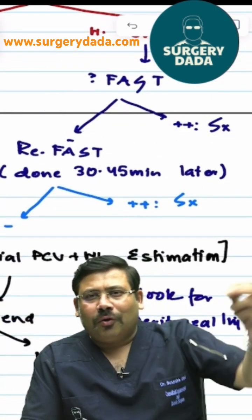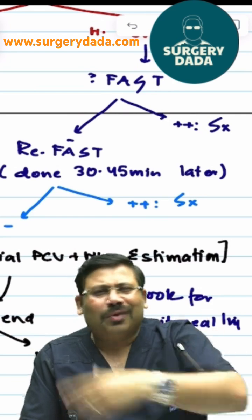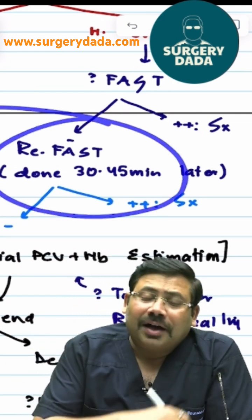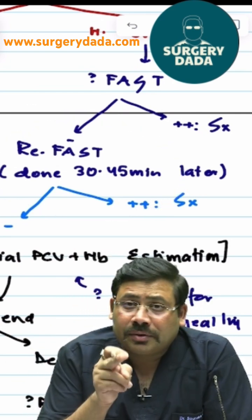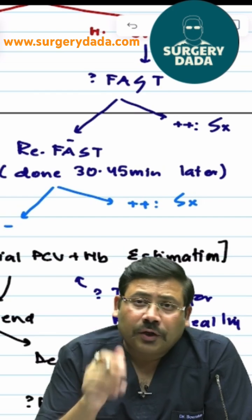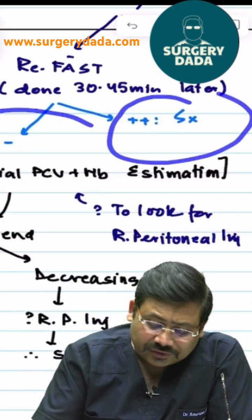Remember, FAST positive - more than 200 CC collection or pneumo/hemoperitoneum or cardiac pneumonia - go for surgery. If the FAST is negative, repeat FAST.